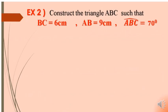Construct triangle ABC such that BC equal to 6 cm, AB equal to 9 cm, and angle ABC equal to 70 degrees. This is the case of side angle side. In this case, we start drawing with the longest side. The longest side here is AB which is equal to 9 cm.